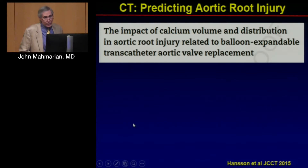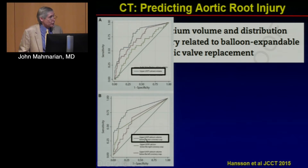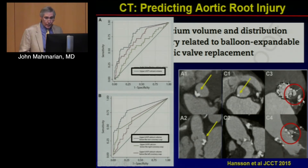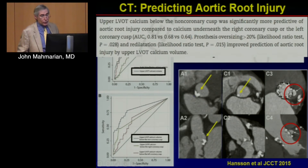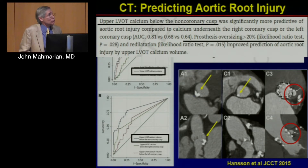Another important issue is preventing aortic root injury. This study found that the most likely reason for aortic root injury is severe upper LVOT calcification, particularly involving the non-coronary cusp. A patient with severe calcification in the upper LVOT developed a vascular injury, and another patient with calcification in the non-coronary cusp extending downward ultimately suffered a rupture of the LVOT. CT is extremely helpful for identifying these potential hot spots.